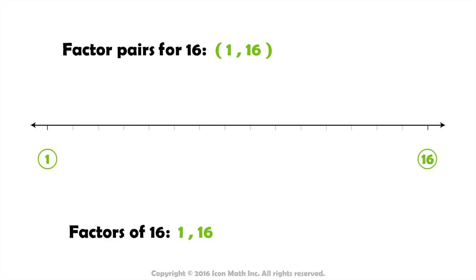Moving to the next number, number 2, is there any whole number that when multiplied by 2 we get 16? Well, you know that 2 times 8 equals 16. So, 2 and 8 is the second factor pair for 16, and these two numbers are factors for 16.